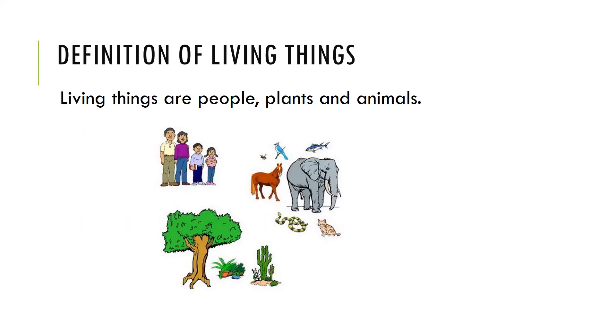Definition of living things: living things are people, plants, and animals.